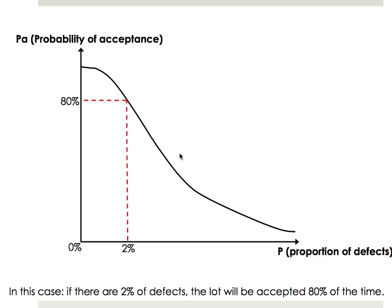So it looks like this. This is probability of acceptance — 100% to 0%. This is the proportion of defects. So in this case, it means when there's 2% of defects, the probability that we accept the batch is 80%.